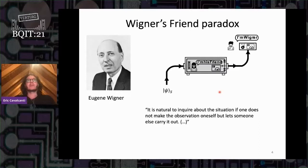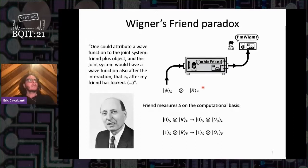We represent this scenario where the friend is in an isolated lab, receives a system S in some state psi, and measures it on some fixed basis. Wigner says one could attribute a wave function to the joint system friend plus object. If S is initially in state zero, the friend's state will change to encode that information to a state O_0, and if S is in state one initially, similarly to O_1.